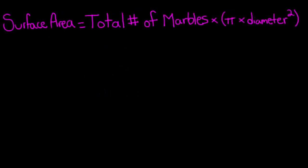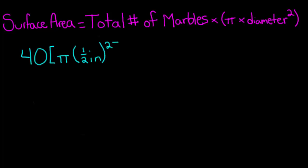Surface area is calculated by taking the product of pi times diameter squared, and then multiplying this number by the total number of marbles at each station. Using this equation for the first station, we would multiply the number of marbles — in this case 40 — times the product of pi times half inch squared, and we would end up with a surface area of 31.4 square inches.